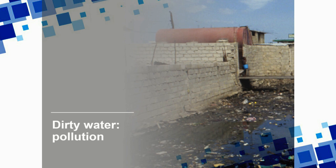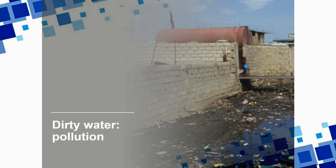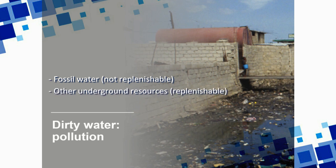Water pollution is also a big issue — contaminated rivers and contaminated groundwater. If a lot of pesticides are used in agriculture, these pesticides may seep into the ground and eventually reach those aquifers, those underground reserves of fresh water. Some of these reserves are fossil water — reserves that do not replenish. Other underground resources do replenish, as rainwater seeps into the ground and refills such aquifers. But both fossil and replenishable aquifers can be contaminated and polluted, meaning we can no longer draw from them for drinking water.